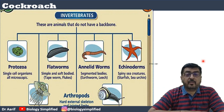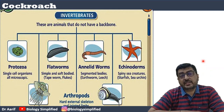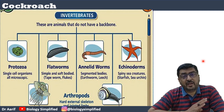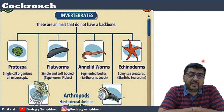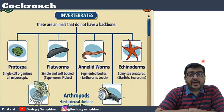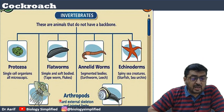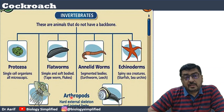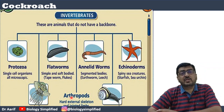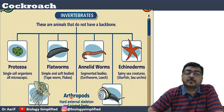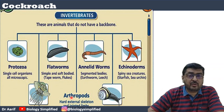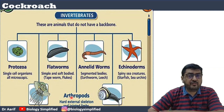The animal kingdom is classified as chordates and non-chordates. Non-chordates range from phylum Porifera right up to Hemichordata. In between the entire classification we have phylum Arthropoda. The arthropods are the largest phylum out of all the phyla, and one of the best representative animals of Arthropoda is the cockroach — hence its study has been included.